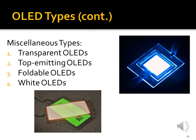Lastly, we have white organic light-emitting diodes, which would be used for lighting. What's really interesting is that you can mix these different types. There's an example coming up of a foldable and white organic light-emitting diode, which could be used as a mendable, bendable, foldable lighting that you can use in your office or at home.